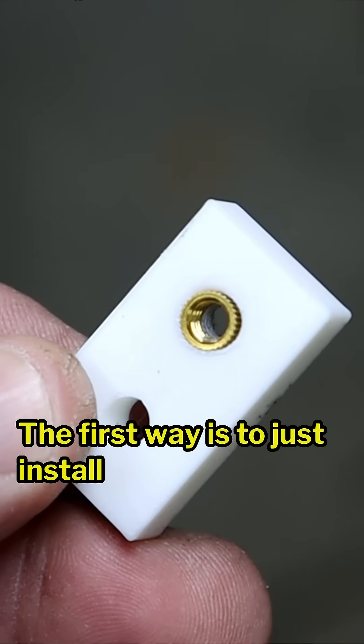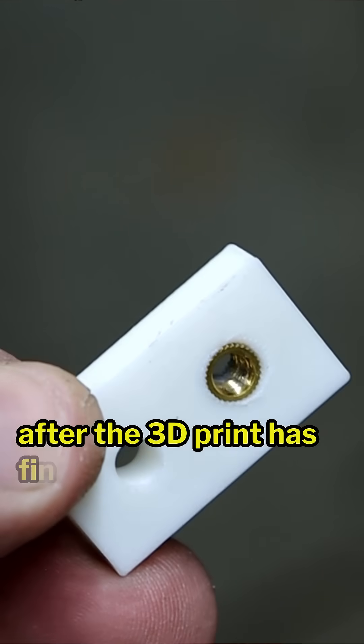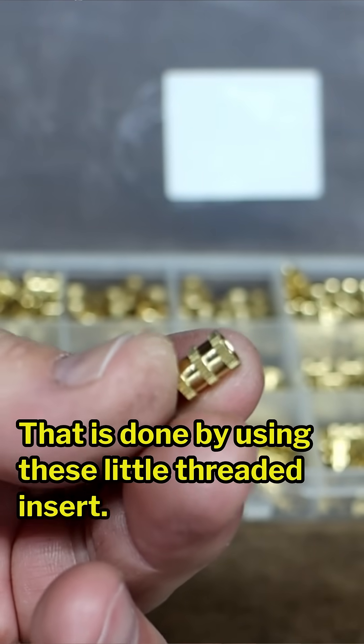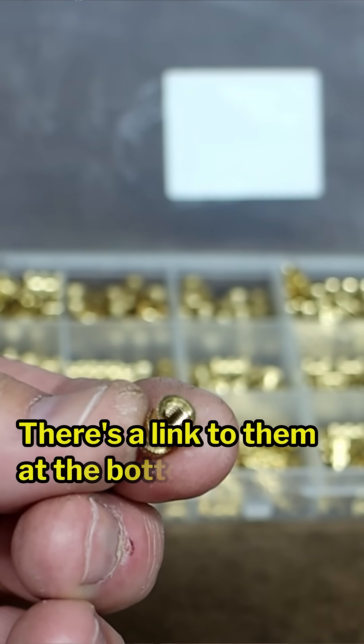The first way is to install the thread after the 3D print has finished. That is done by using these little threaded inserts. There's a link to them at the bottom of the screen.